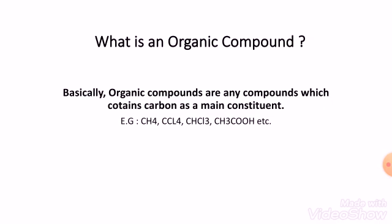Let's see some examples. Methane is one organic compound which contains carbon and hydrogen as main constituents. The second example is carbon tetrachloride — in CCl4, you can see carbon and chlorine, which is a halogen. So this is an example that includes a halogen in the organic compound. The next example is chloroform, CHCl3, which again contains chlorine.